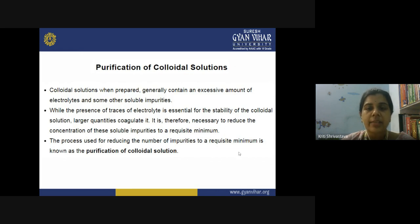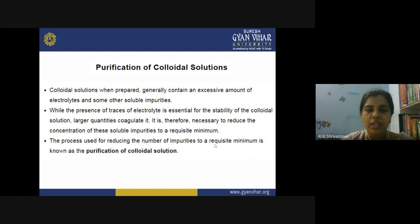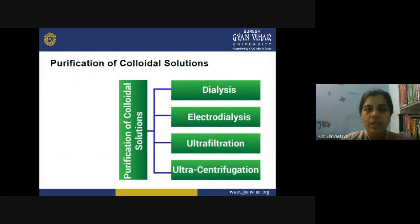It is very necessary to reduce the concentration of these soluble impurities to a requisite minimum. You cannot remove them completely, but you can reduce their concentration to a minimum level. The process used for reducing the number of impurities to a requisite minimum is known as purification of the colloidal solution. For the purification of colloidal solutions, we have four different methods: dialysis, electrodialysis, ultrafiltration, and ultracentrifugation.